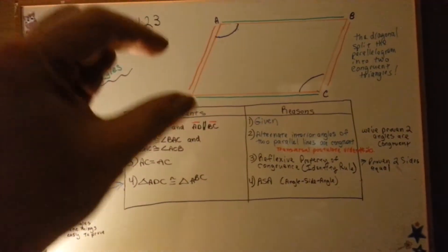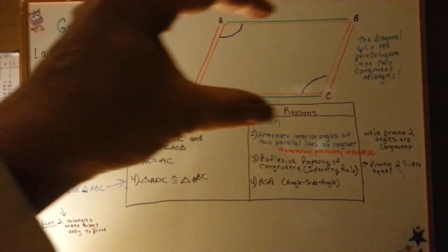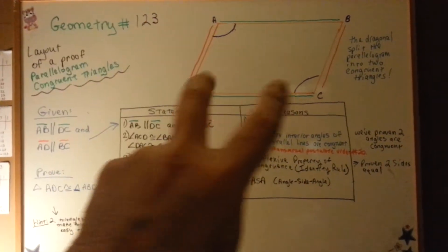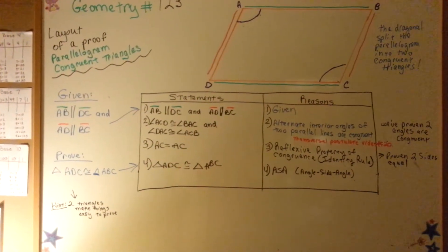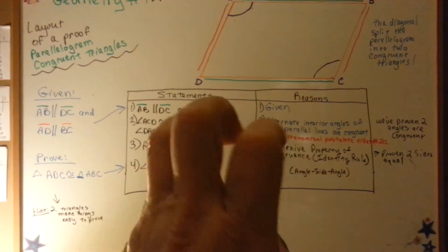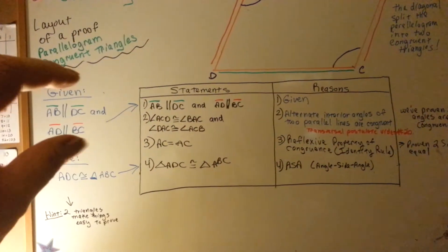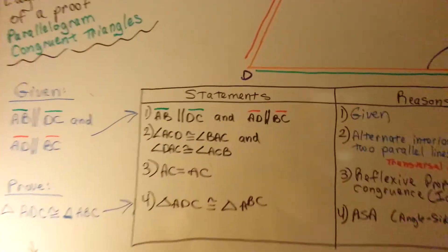We've got our parallelogram, and I've made the two parallel top and bottom ones green on the outside and these two red on the outside, so they're a little easier to see. We've got our statement table with statements and reasons. We've got our given and our proof, like we should.